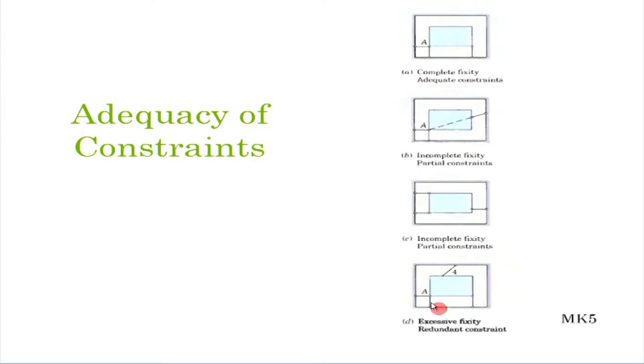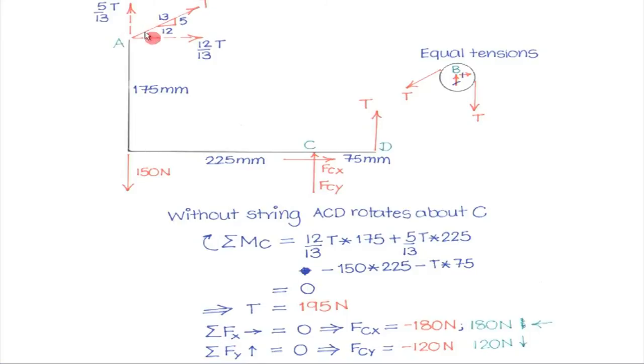In this particular course we only deal with statically determinate systems, in which the total number of unknowns equals the total number of equations that can be written for the system. In the sample problem we solved earlier, the number of unknowns was 3, and we could write 3 equations of equilibrium and obtain all unknown values. If an extra constraint were provided somewhere, the structure would be statically indeterminate, and that is beyond the scope of this course.